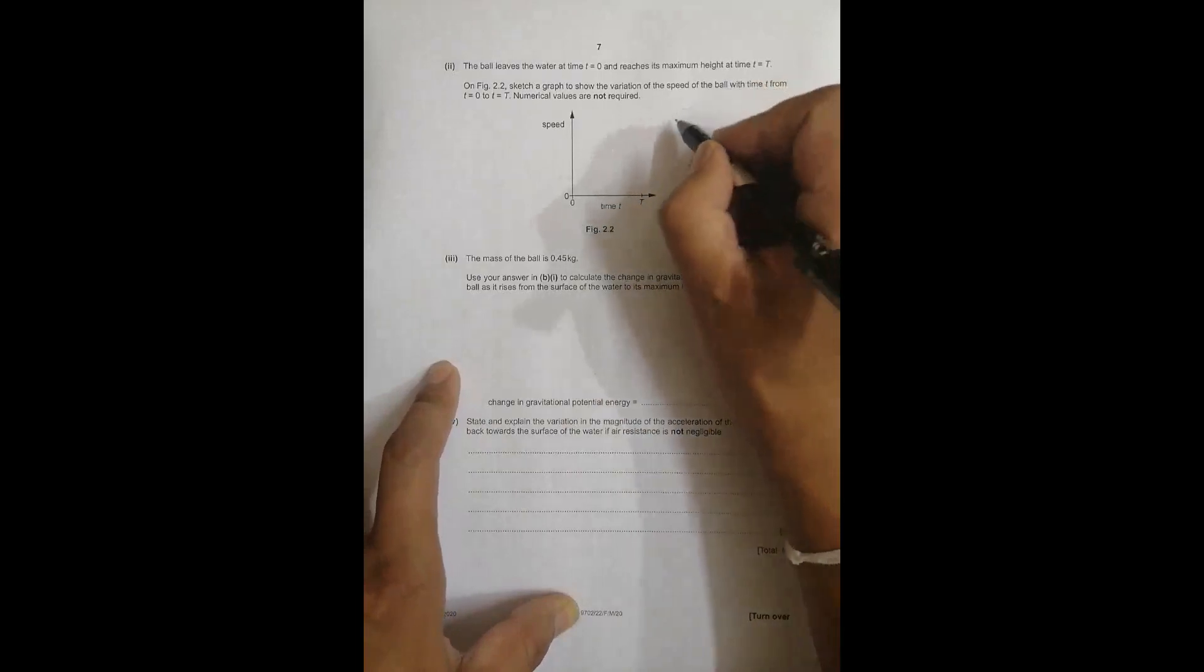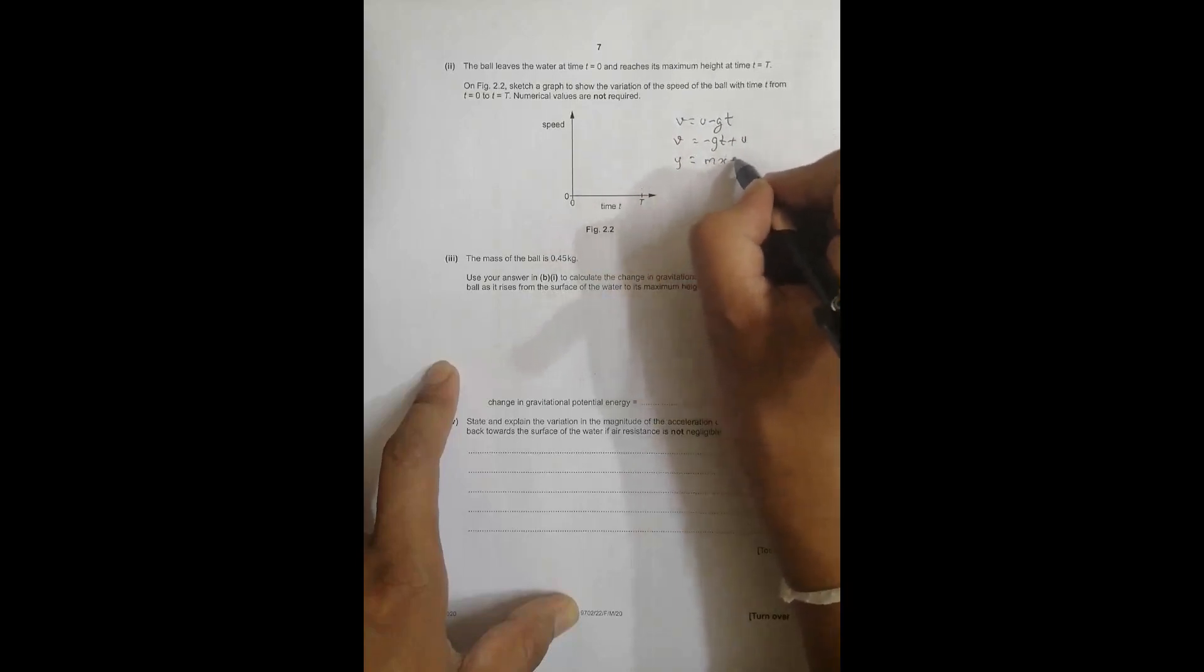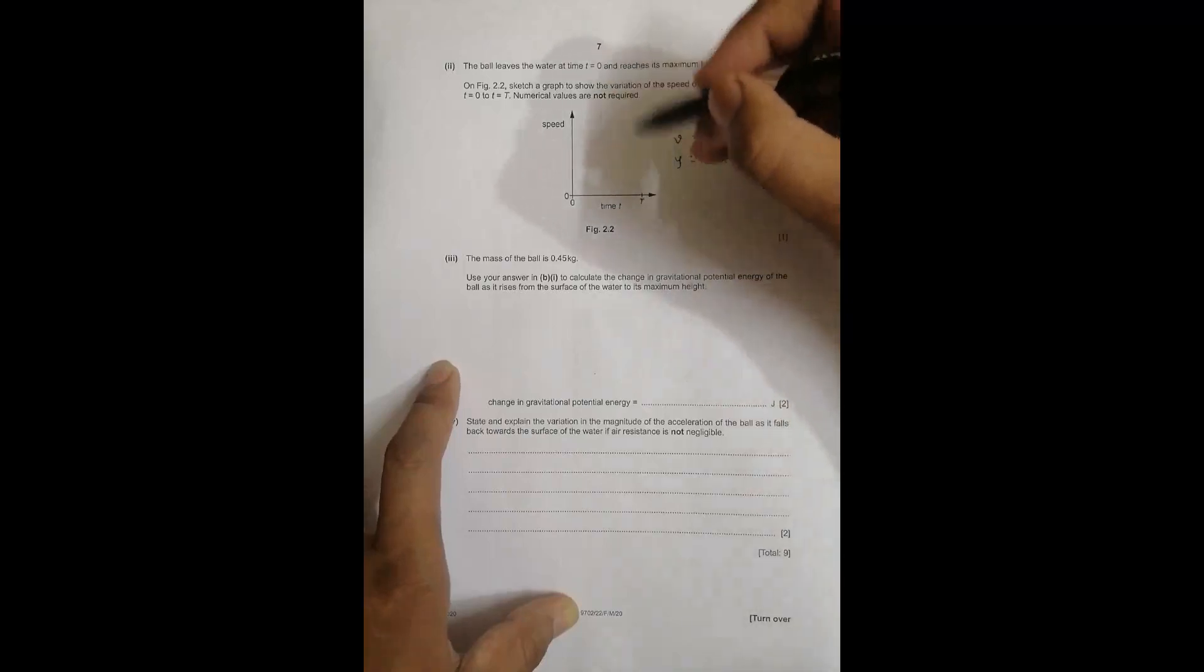The equation for velocity is V equals u minus gt, which can be written as V equals minus gt plus u. This equation resembles y equals mx plus c, a straight line equation with negative slope and positive intercept.